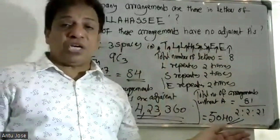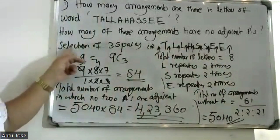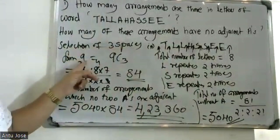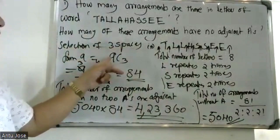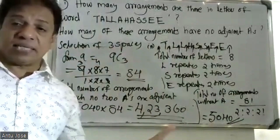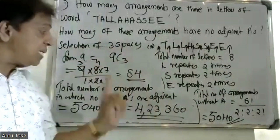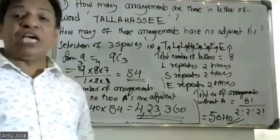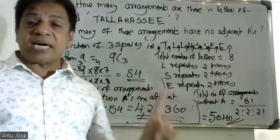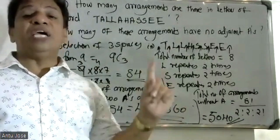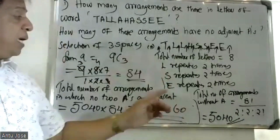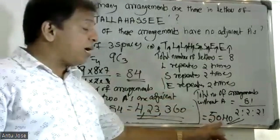We have 3 spaces. The selection of 3 spaces from 9 is 9C3. The calculation of 9C3 is 84.